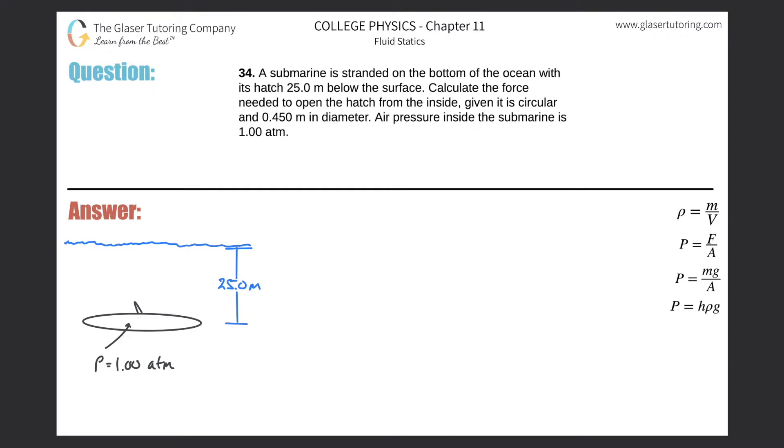Number 34: A submarine is stranded on the bottom of an ocean with its hatch 25 meters below the surface. Calculate the force needed to open the hatch from the inside given it is circular and 0.45 meters in diameter. Air pressure inside the submarine is one atmosphere. All right, so in order to answer a question like this, we have to figure out the force needed to open this hatch from the inside.